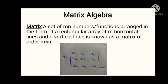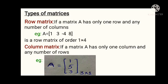There are many types of matrices. First one is row matrix. If a matrix A has only one row and any number of columns, then the matrix is said to be a row matrix. The example is given below. The order of the matrix is 1 by 4, meaning 1 row and 4 columns.